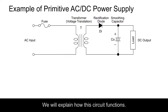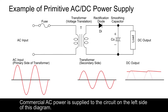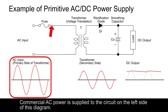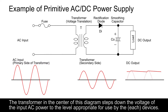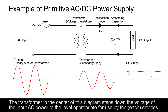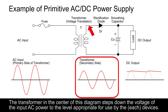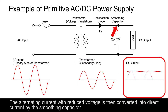We will explain how this circuit functions. Commercial AC power is supplied to the circuit on the left side of this diagram. The transformer in the center of this diagram steps down the voltage of the input AC power to the level appropriate for use by each device. The alternating current with reduced voltage is then converted into direct current by the smoothing capacitor.